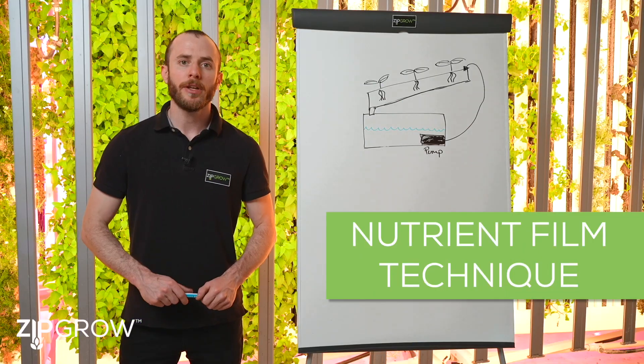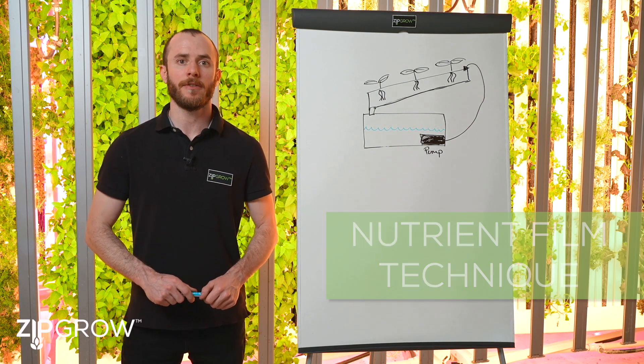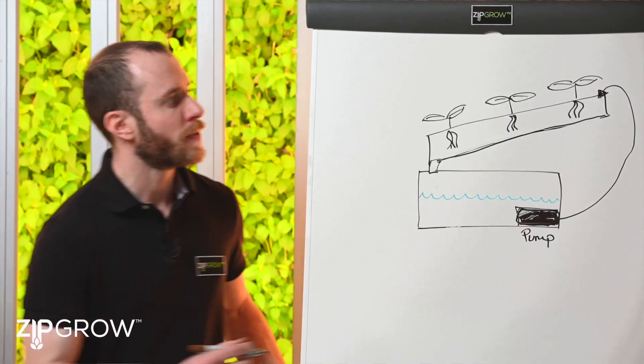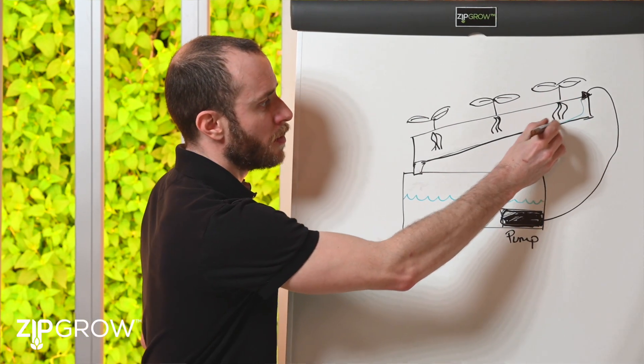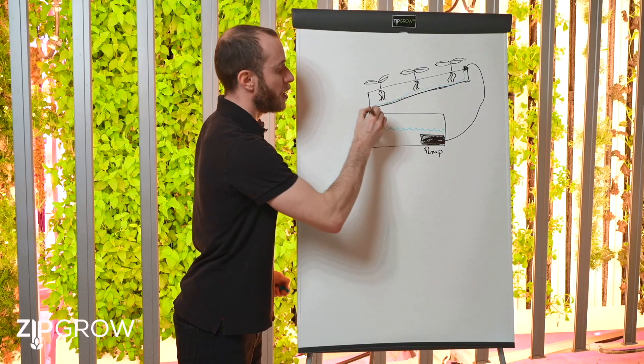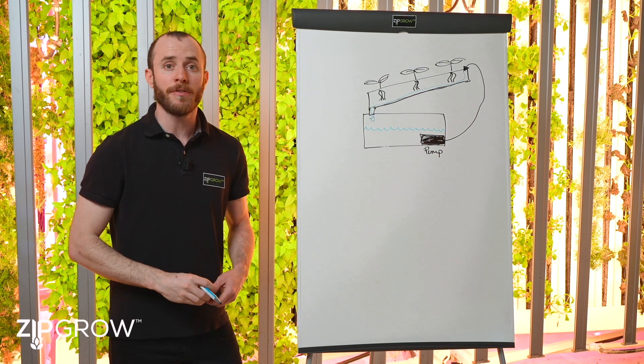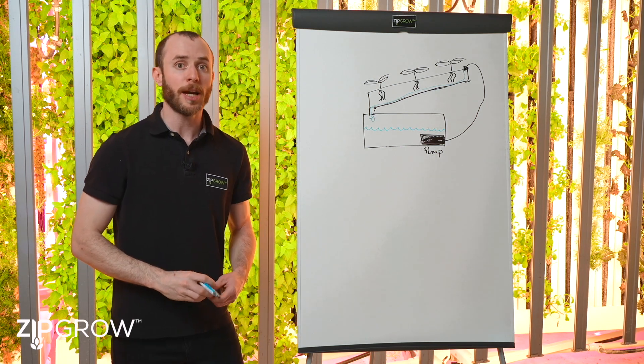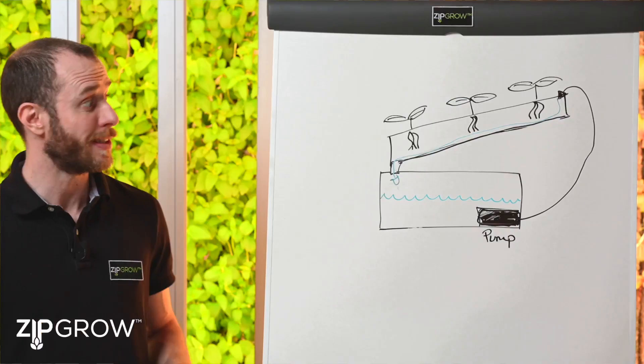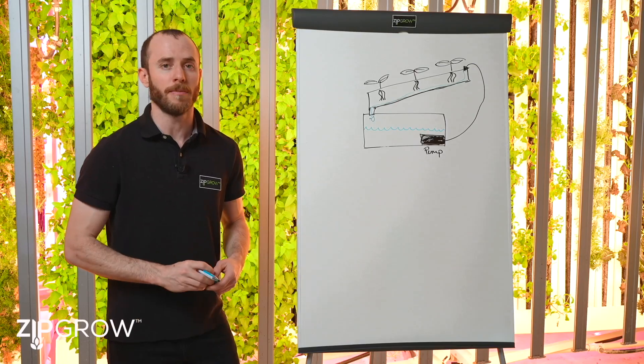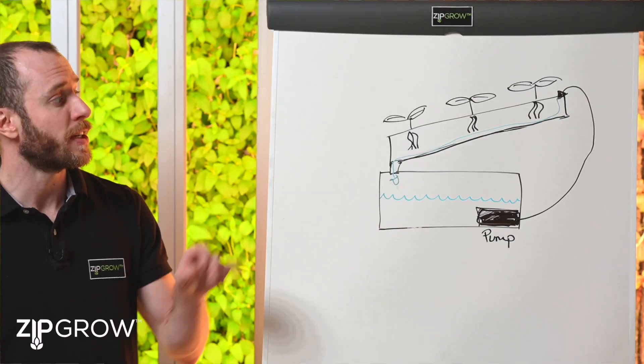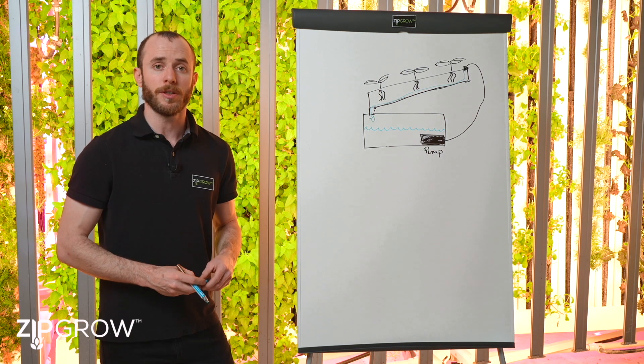Another commonly used method is known as nutrient film technique or NFT for short. A shallow stream of water is recirculated on a sloped trough, channel or gutter. The depth of the water should be no more than a slight film, giving the technique its name. This allows the roots to be exposed to adequate amount of water, oxygen and nutrients.